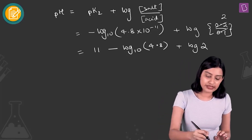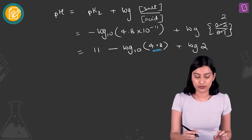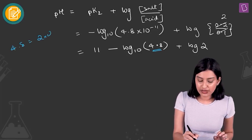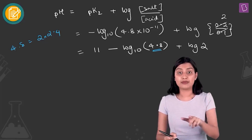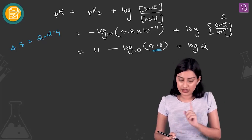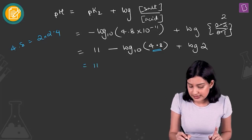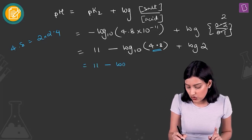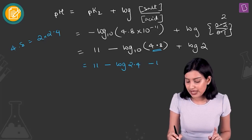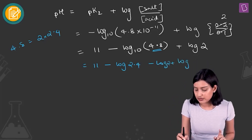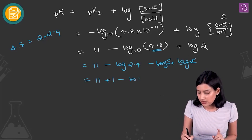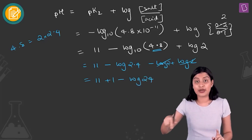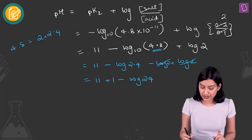Now I'm going to write 4.8 as 2 × 2.4, and log(AB) = log A + log B. So what you get is 11 minus log 2.4 and minus log 2, and the plus log 2 and minus log 2 cancel out. So you have 11 plus 1 minus log 24, approximating 24 to 25.